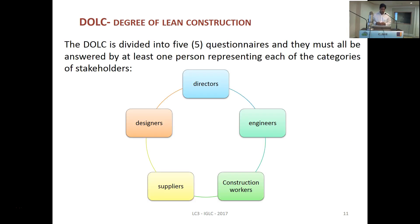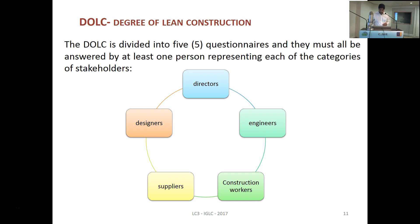The DALK was divided into five questionnaires, and they must all be answered by at least one person representing each category of stakeholders: directors from the contractor, field engineers, construction workers, suppliers, and designers.